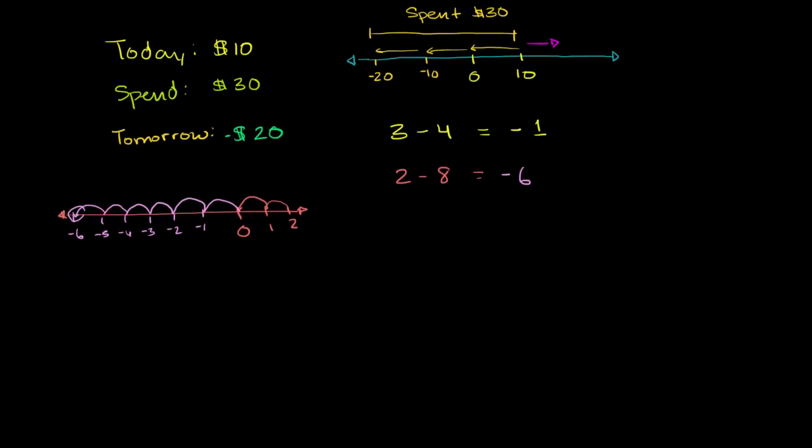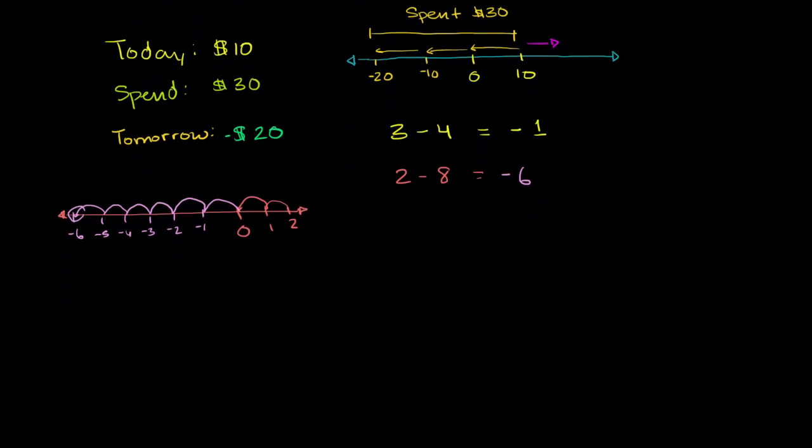Let me take negative 4 minus 2. So we're starting at a negative number, and then we're subtracting from that. And if this seems confusing, just remember the number line. Just remember the number line. So this is 0 right here. This is negative 1, negative 2, negative 3, negative 4. So that's where we're starting.